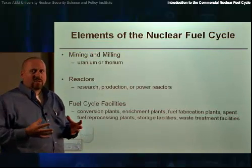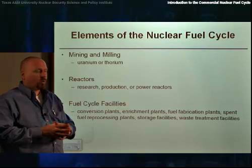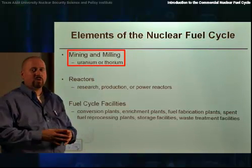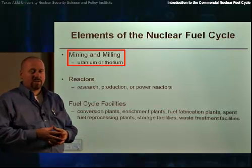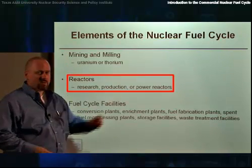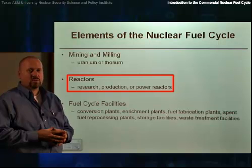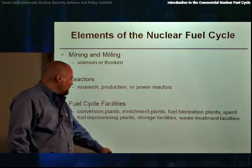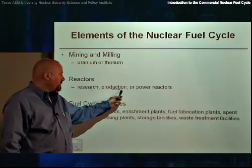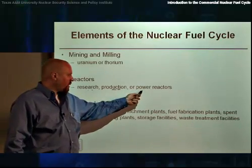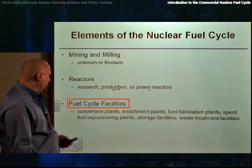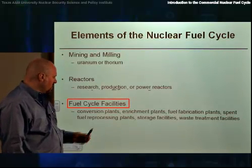The basic elements of a nuclear fuel cycle we typically break into the mining and milling area, which is where you mine the raw material that you'll use as a fuel. Then the reactors, which are used for either research, production of plutonium — usually for weapons purposes — or power reactors for the production of power, and then fuel cycle facilities themselves.